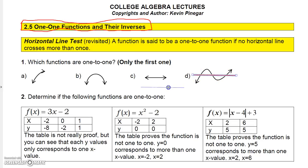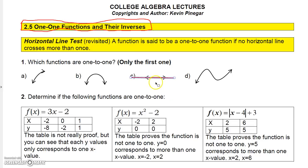You might think a horizontal line would be one-to-one, but technically, if you laid the horizontal line on the horizontal line, you find that the horizontal line crosses that line at infinitely many places.